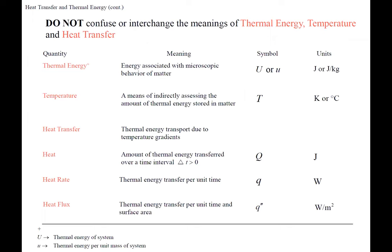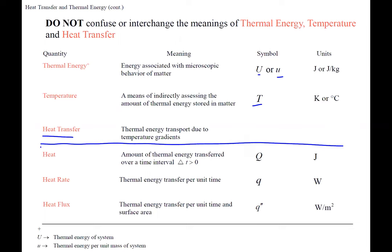Here it shows the main symbols we'll use. Thermal energy is capital U, or lowercase u per kilogram. Temperature is capital T. For heat transfer, the quantity of heat over a time interval is capital Q in joules. Heat rate, which in thermo was Q-dot, is actually lowercase q in heat transfer — be aware of that symbol change between the books.